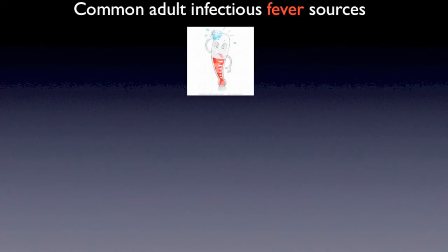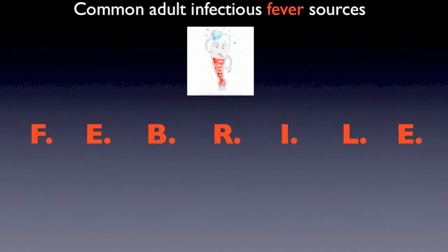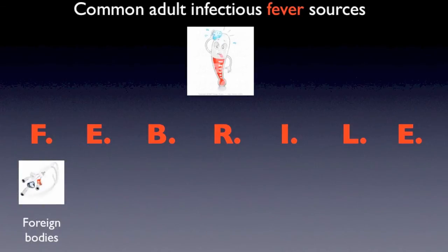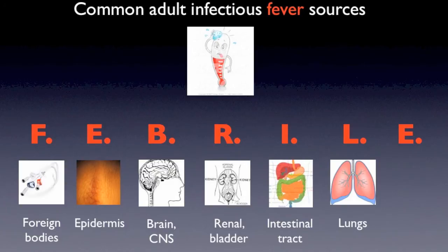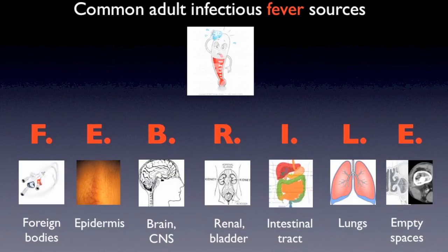For common adult sources of fever, the mnemonic is FEBRILE — I always like mnemonics that tell you what they're for. Foreign bodies like triple lumen catheters, Skin/Epidermis, Brain, Renal, Intestinal tract, Lungs, and Empty spaces like sinuses. I also think of bone, like osteomyelitis. The empty space is also a placeholder for anything we didn't think of.